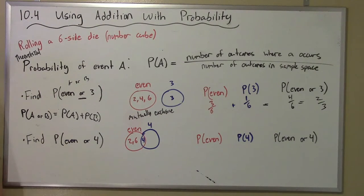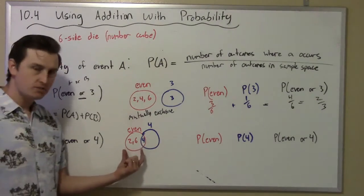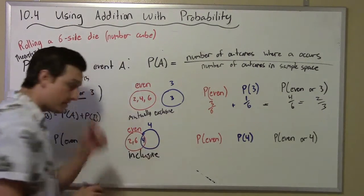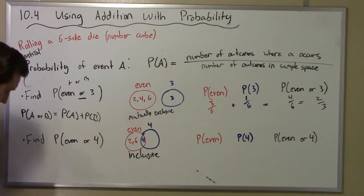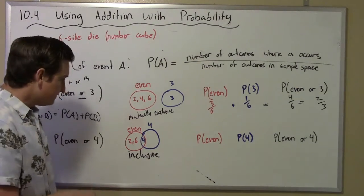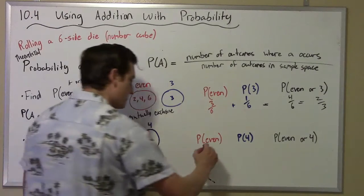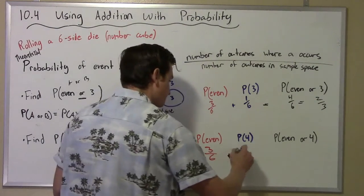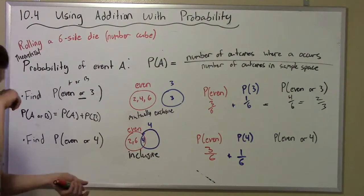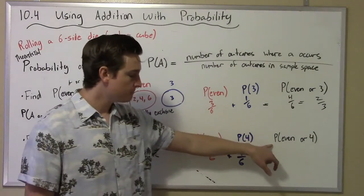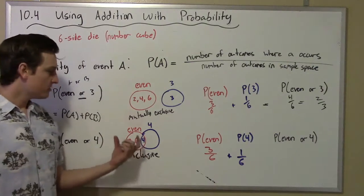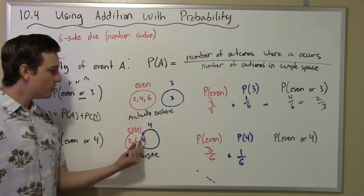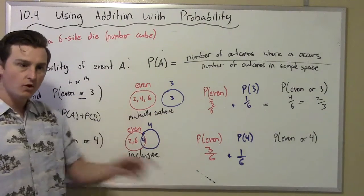Now let's look at the probability of an even or a four. Notice that four is itself an even number, so these events are actually inclusive — there's some overlap we have to account for. There are three ways to get an even (2, 4, 6) out of six options. There's one way to roll a four out of six. But if I add those together I get four out of six, yet the actual probability of rolling even or a four is only three out of six — because you don't want to count four twice, both as an even and as a four. That's the same outcome.